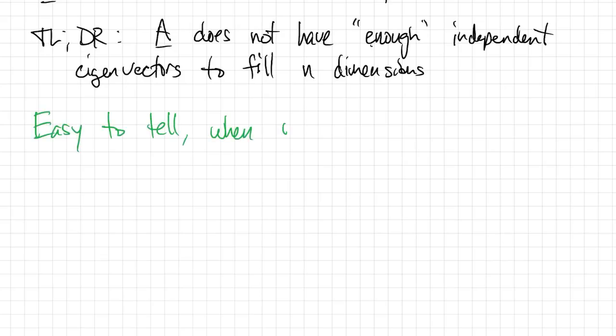In general, this is not an easy thing to spot, but it is very easy to tell when you have a defective matrix in the 2×2 case. First of all, if A has no repeated eigenvalues, then it's not defective. That's true regardless of the size.